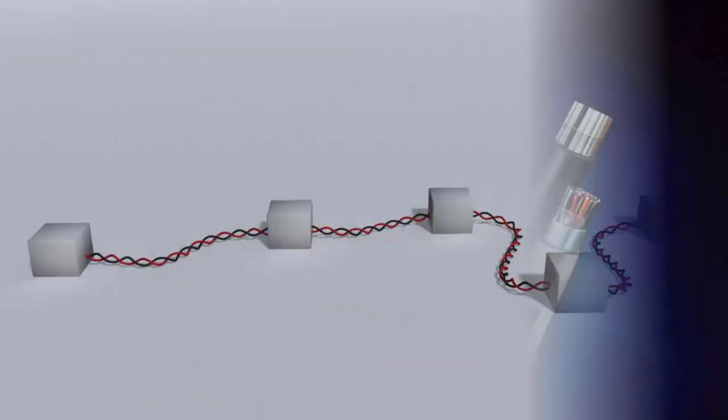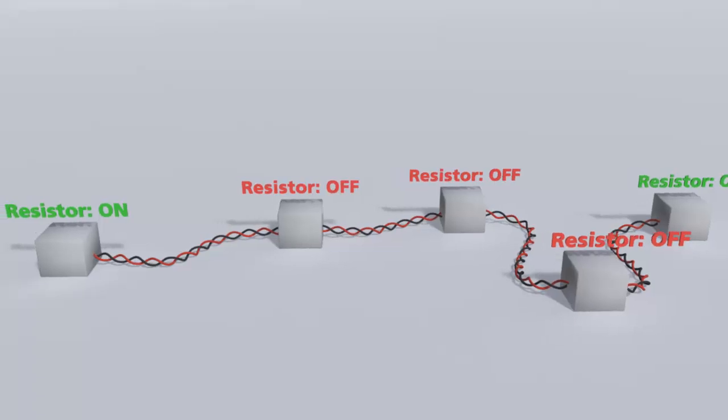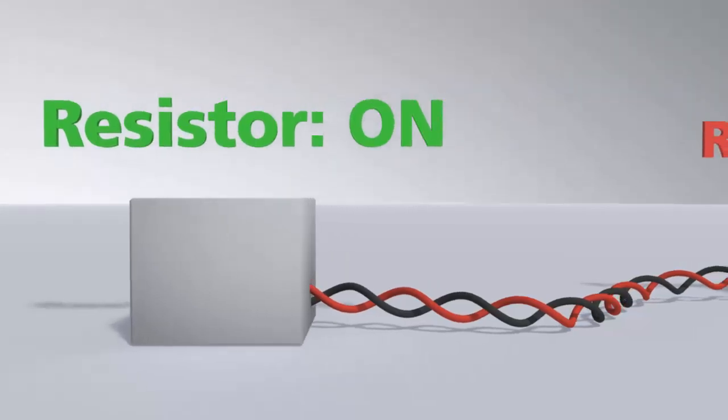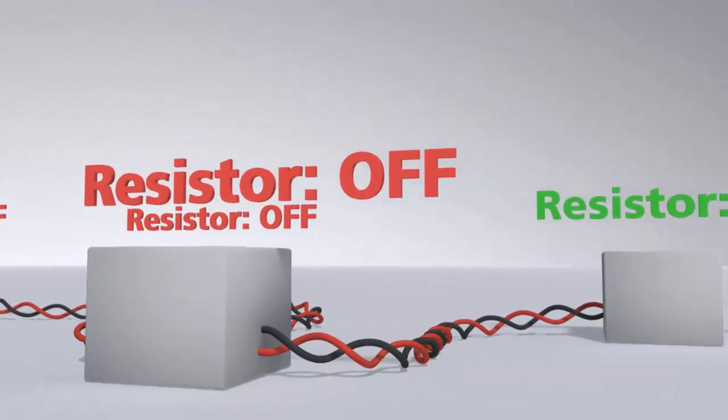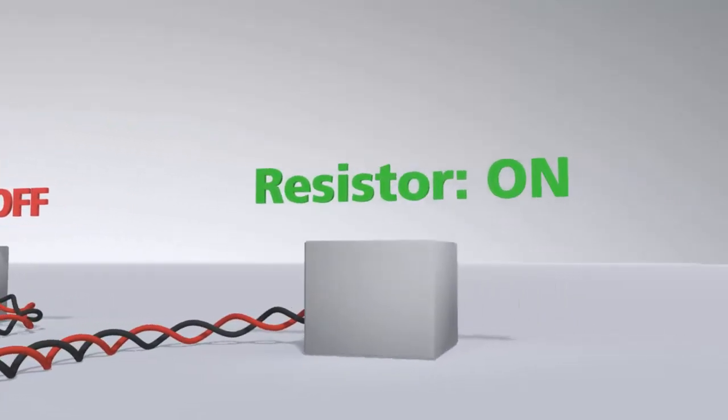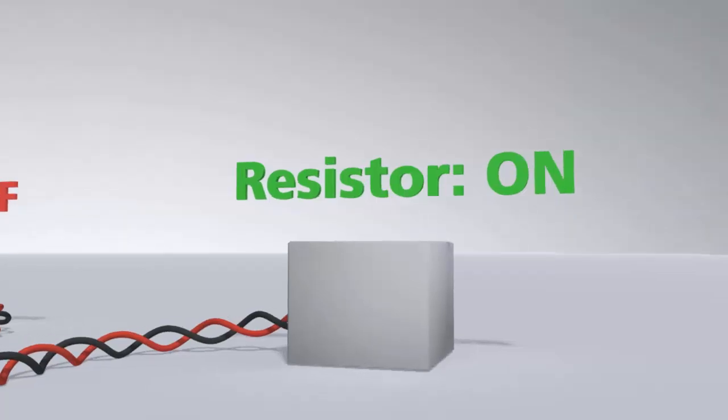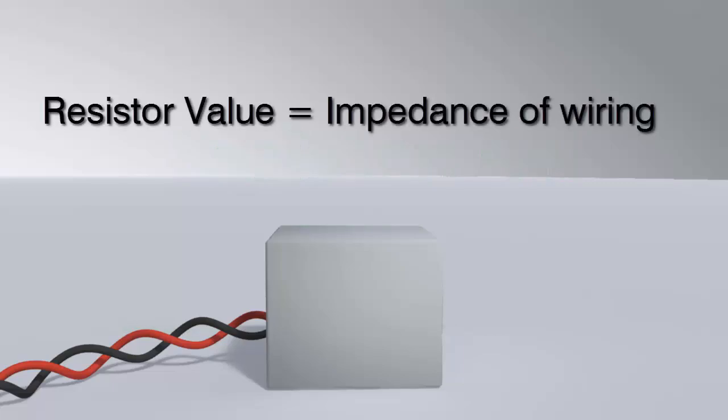On a network with proper topology, you only need termination resistors at the two extreme ends of your network in order to prevent signal reflection from an open circuit. Some devices have a resistor built-in. If you use such a device and the resistor is engaged, it should only be placed at the extreme ends. If your devices do not have built-in termination, note that the value of each resistor should be equal to the characteristic impedance of the wiring, typically 120 ohms for twisted pairs.